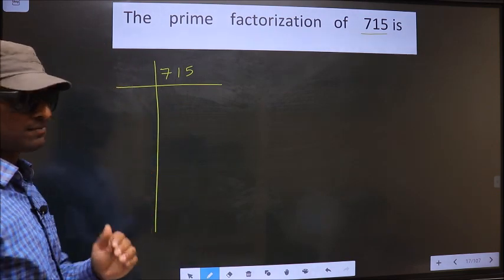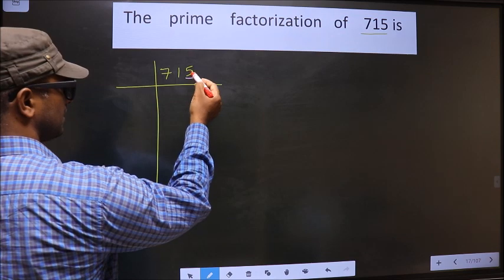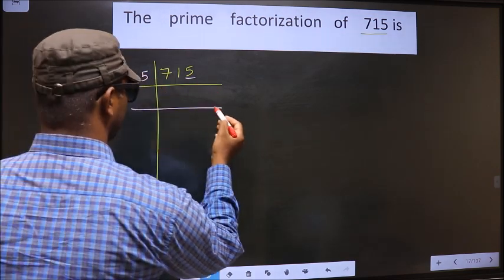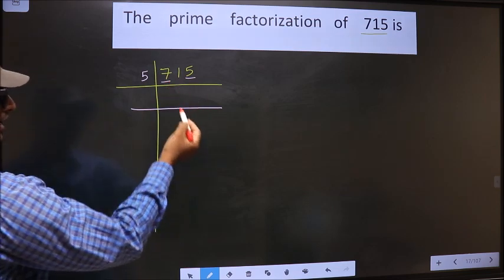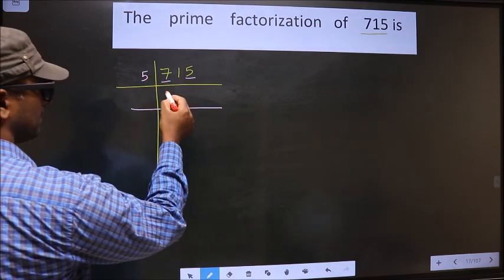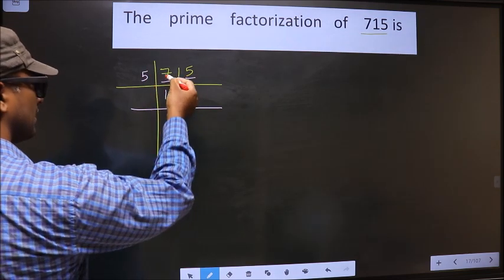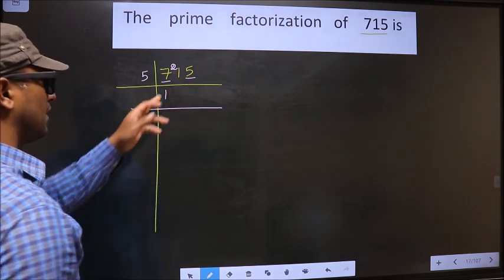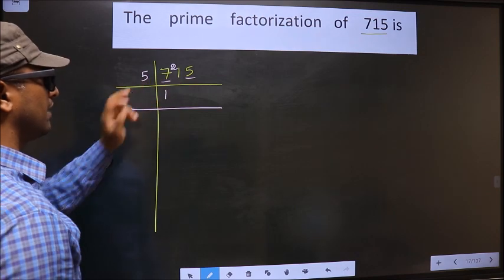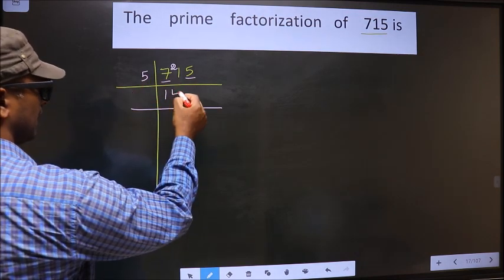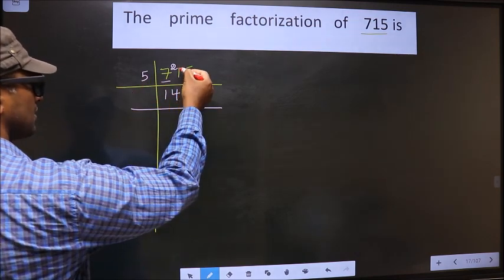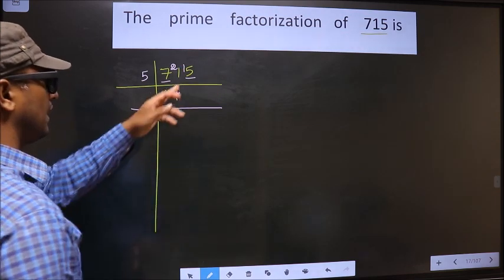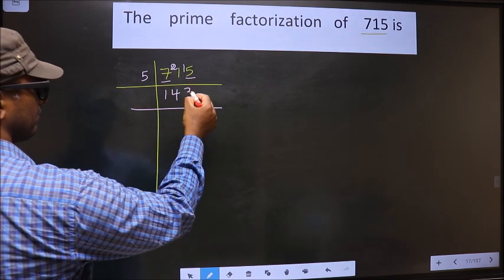For this number, the last digit is 5, so we take 5 here. The first number is 7. A number close to 7 in the 5 table is 5×1=5. 7-5=2, carry forward the 2 making it 21. A number close to 21 in the 5 table is 5×4=20. 21-20=1, carry forward the 1 making it 15. When do we get 15 in the 5 table? 5×3=15.